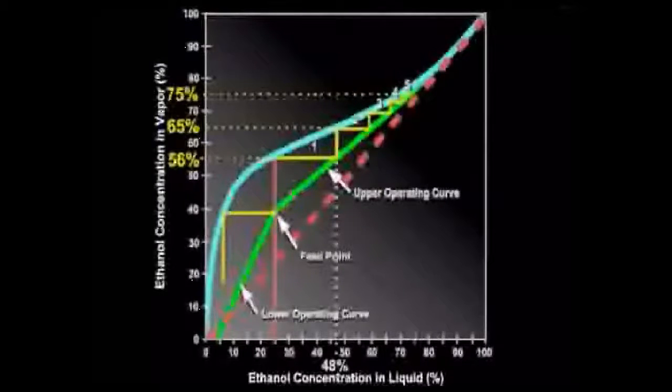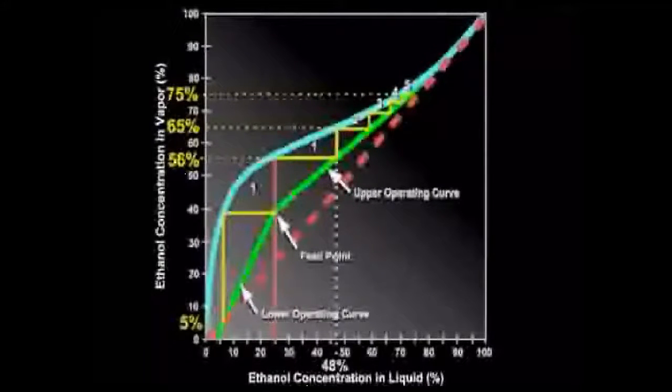Suppose we only want 5% ethanol in the bottom stream. This only requires one stage in the lower section of the column.